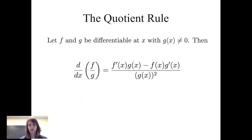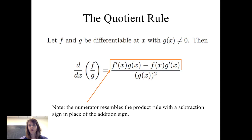If I have two differentiable functions f and g with g of x not equal to 0, then the derivative of the quotient f over g is equal to f prime of x times g of x minus f of x times g prime of x, divided by the square of the denominator, g of x squared. We notice that the numerator looks very similar to the product rule with the only difference being the addition sign is changed to a subtraction sign.